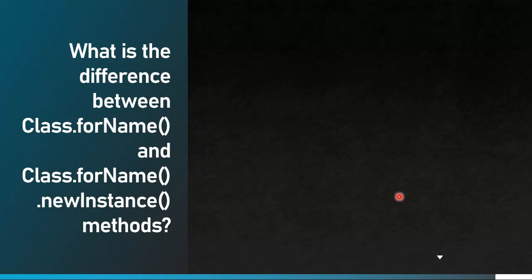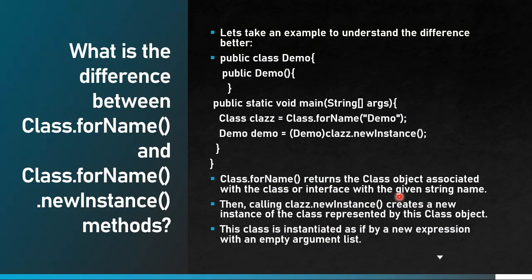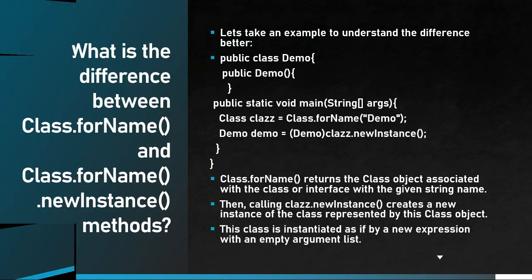What is the difference between Class.forName() and Class.forName().newInstance()? Using a demo class as an example with a constructor and main method: Class.forName('Demo') returns the Class object associated with the class or interface with the given string name. Then calling newInstance() on that Class object creates a new instance of the class — this is equivalent to using the new keyword to create an object.